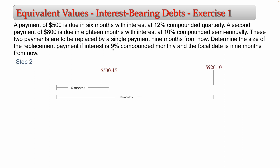The interest for the replacement payment is 9% compounded monthly, so m equals 12. The focal date is nine months from now — this is where the replacement payment x occurs. Now move each scheduled payment to the focal date. For $530.45, the focal date is in the future: nine months minus six months equals three months ahead, so n equals 3 (counting in months).